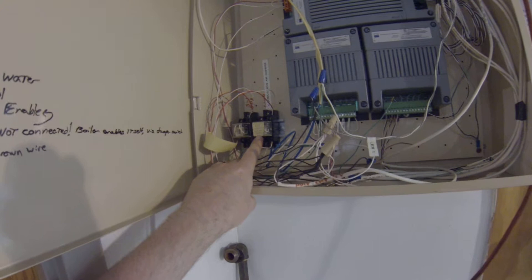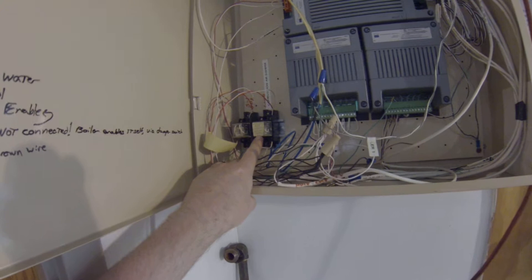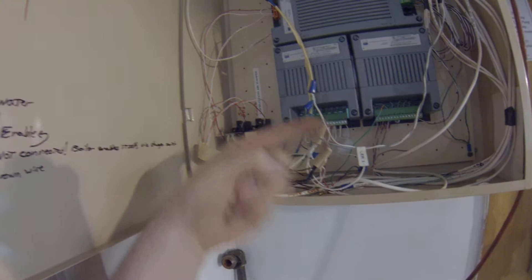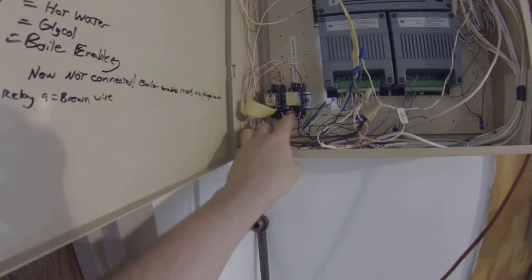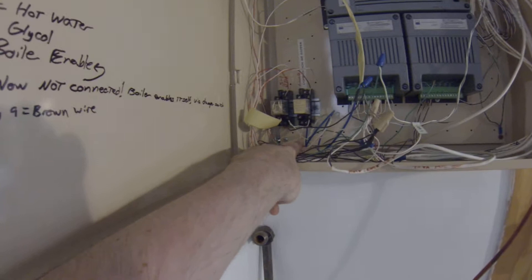The relays control things like the air handler and the combustion air damper. This relay controls the combustion air damper. It receives a signal from the boiler saying we want heat. That signal comes in here and switches this double throw relay. The white common wire is 24 volts AC and it's either going out the white or the blue wire here.